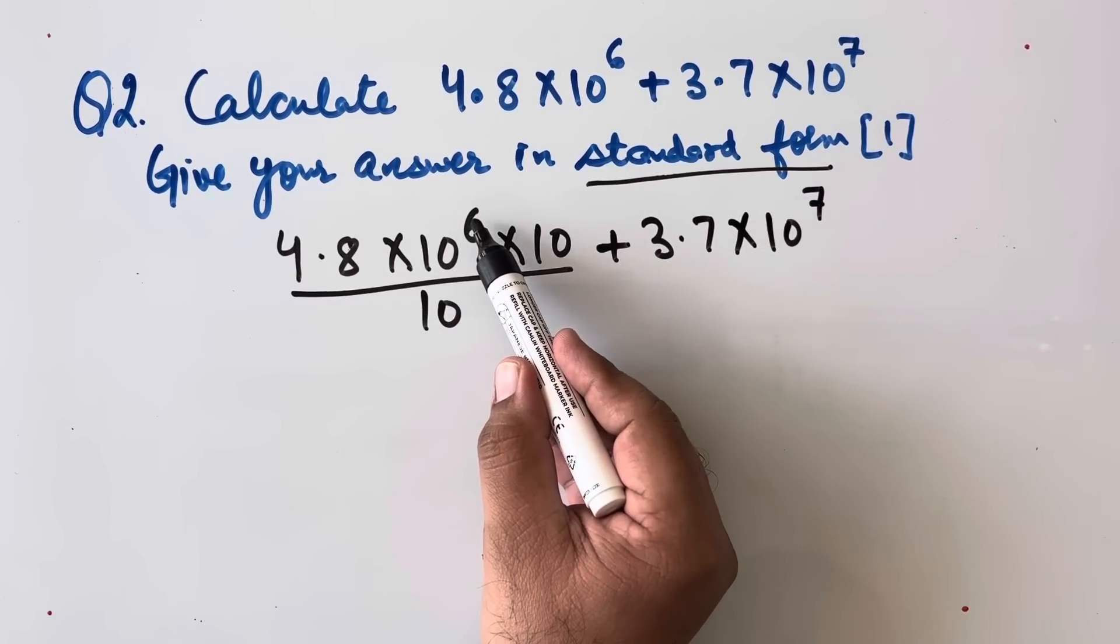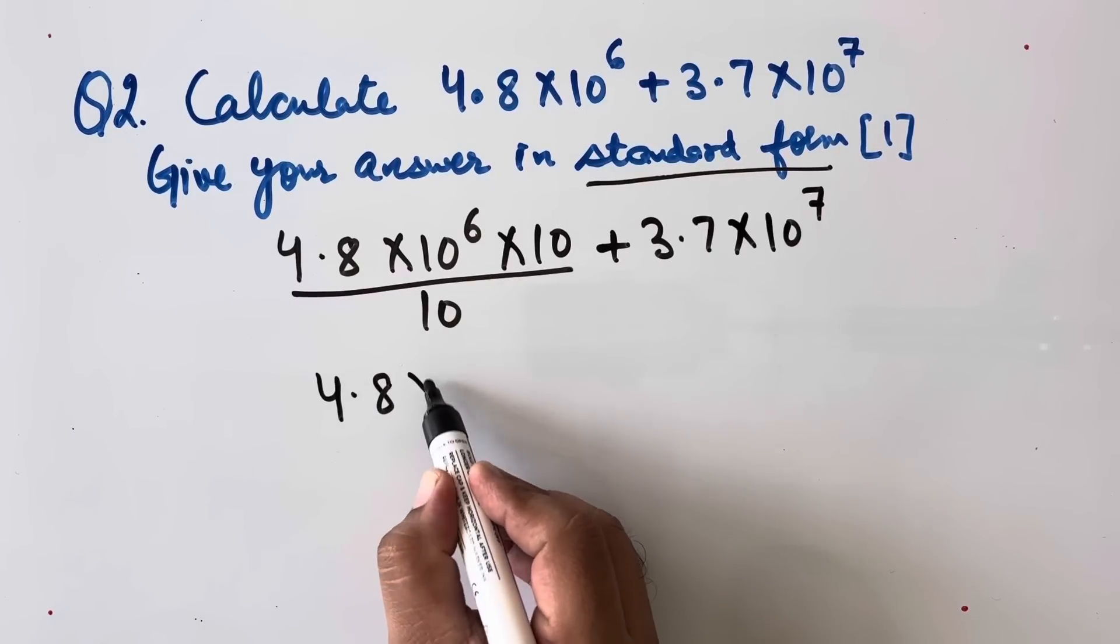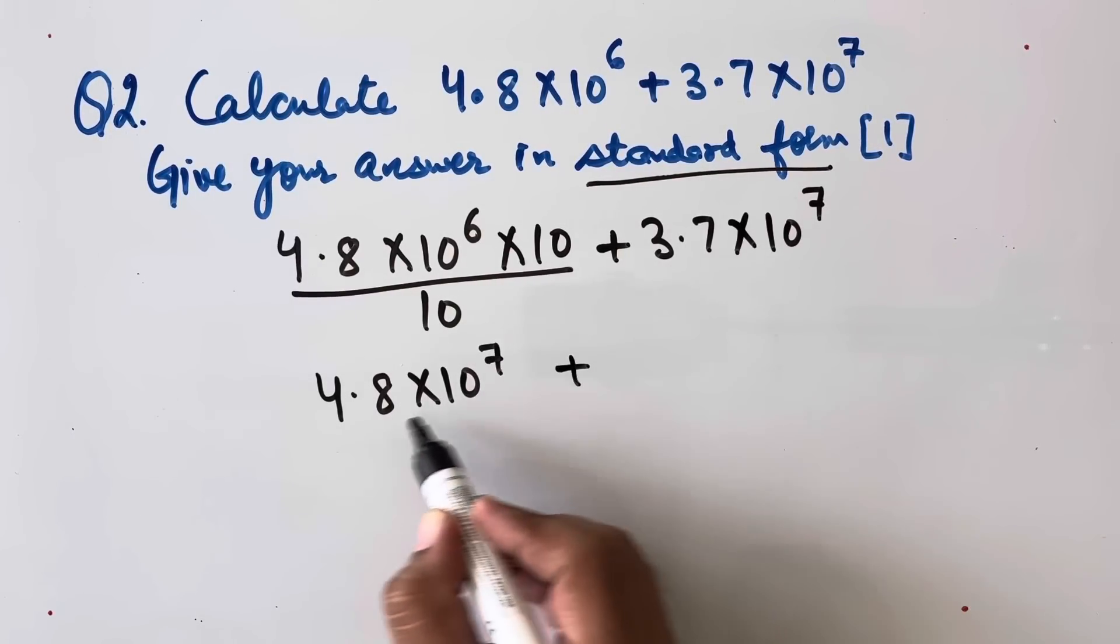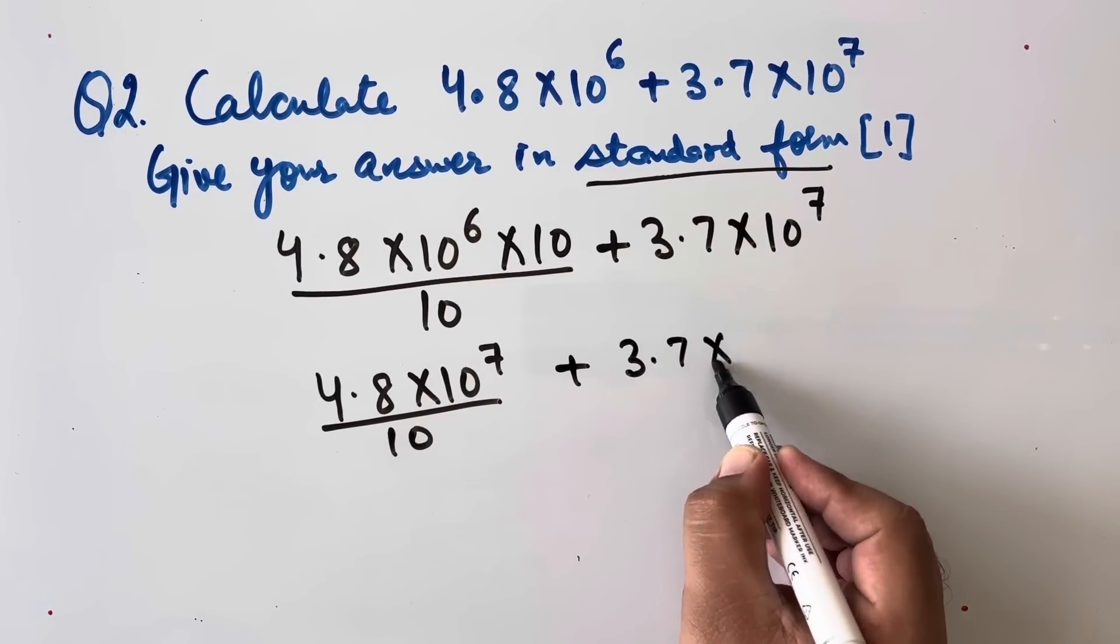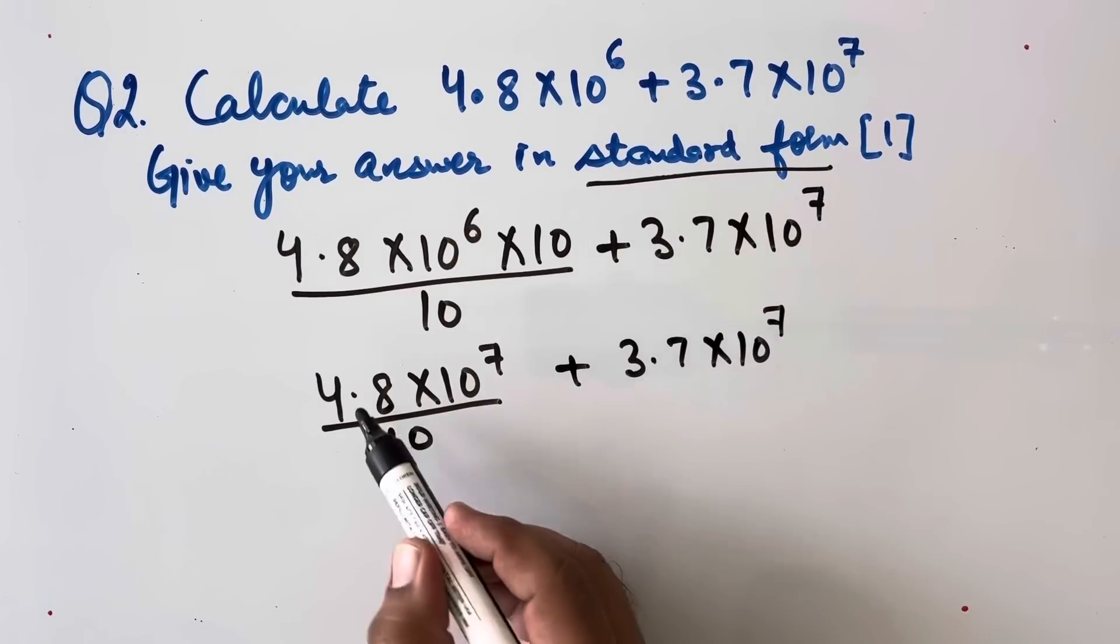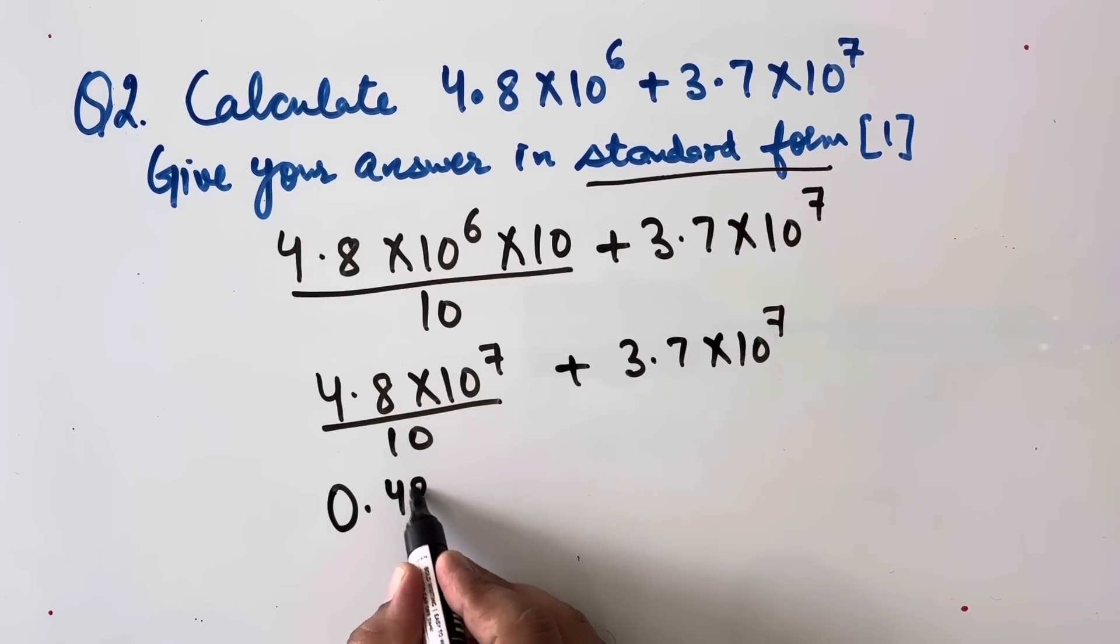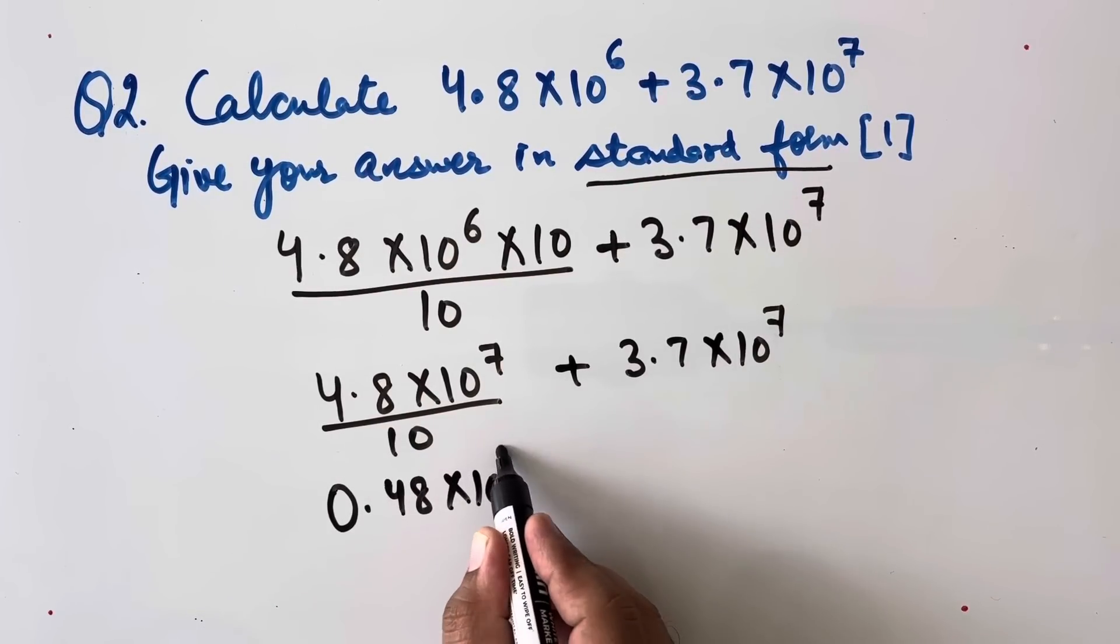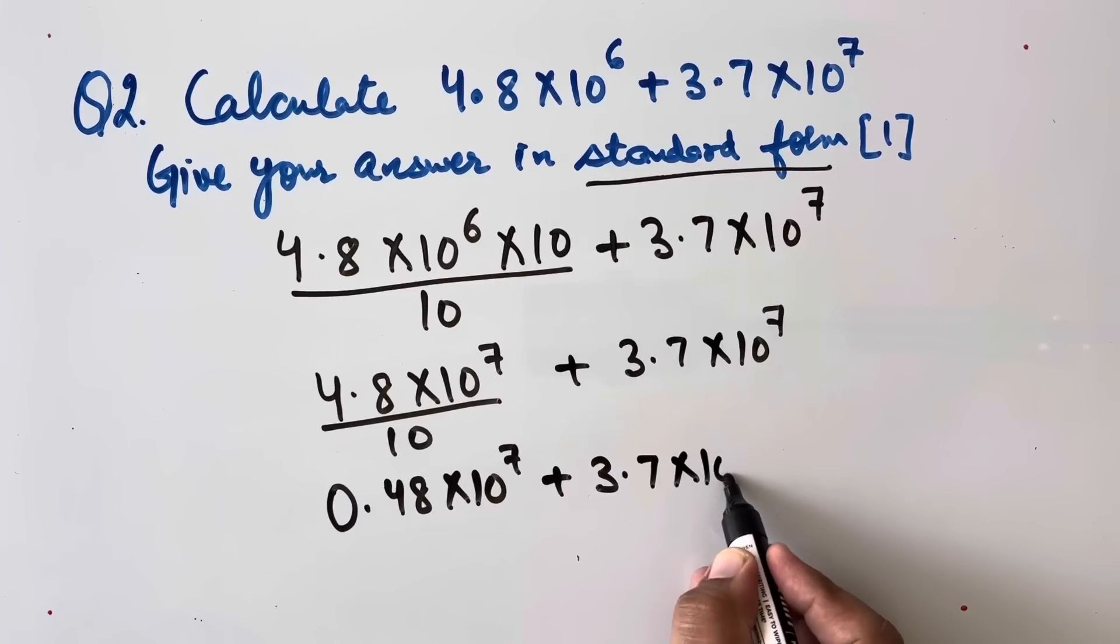Now 10^6 × 10 will be 10^7. Now 4.8 divided by 10 will be 0.48 × 10^7 plus 3.7 × 10^7.